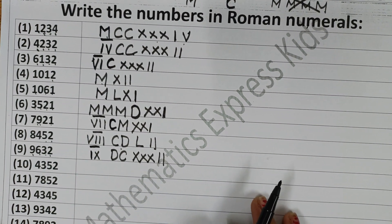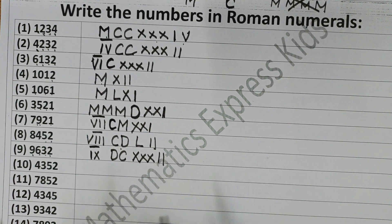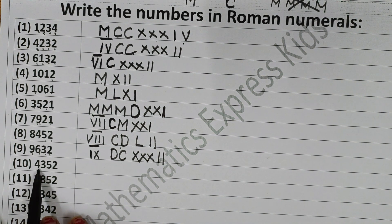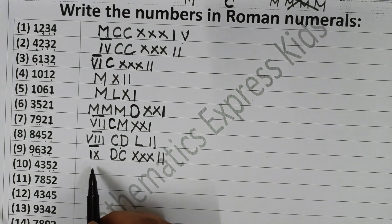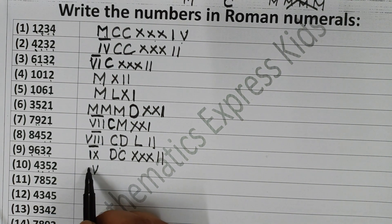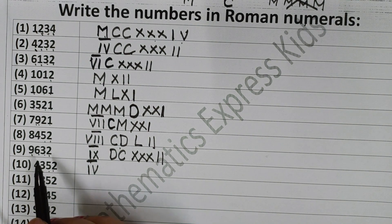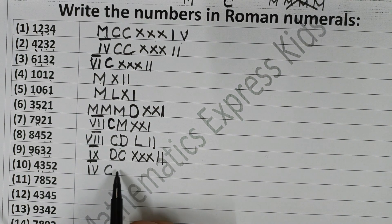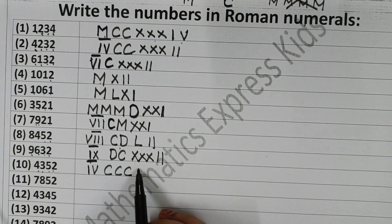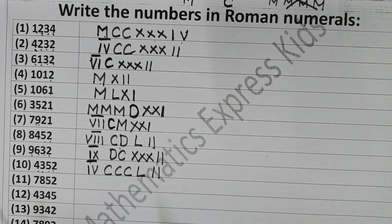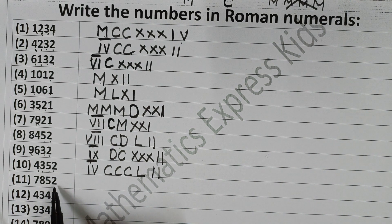Now the next one is 4352. For 4000, write IV with a bar over it. Then 300 is CCC, 50 is L, and 2 is II. So 4352 is IV-bar CCCII. Clear?